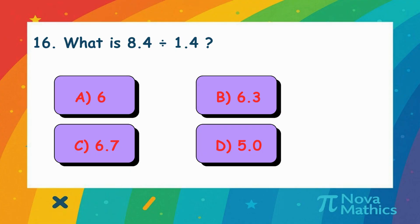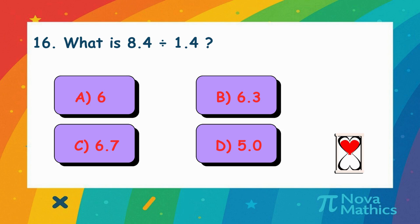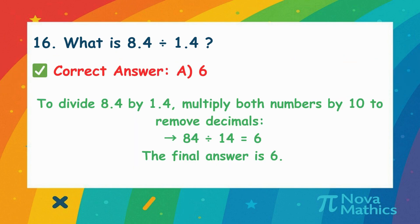15. What is 8.4 divided by 1.4? We want to divide 8.4 by 1.4. Multiply both by 10 to make them whole numbers. 84 divided by 14 equals 6.